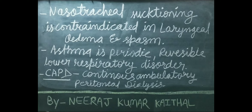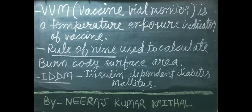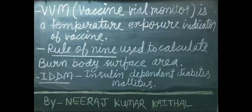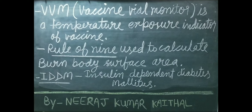CAPD ka full form hai Continuous Ambulatory Peritoneal Dialysis. VVM means Vaccine Vial Monitor — it is a temperature exposure indicator of vaccine. VVM ka full form hai Vaccine Vial Monitor. Kai vaccines heat ke liye kaafi sensitive hote hain. Vaccines par laga VVM yahi batata hai ki vaccine ab upayog karne yogya hai ya nahi. Yadi VVM par color badal jaye toh vaccine ko discard kar dena chahiye.